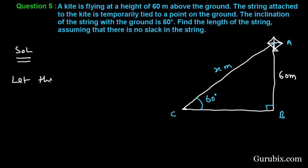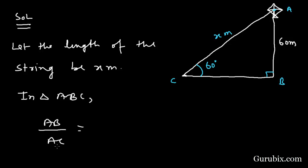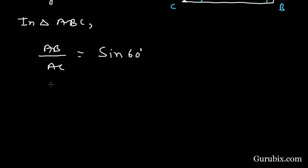Let the length of the string be X meters. Now we shall look at triangle ABC and find the ratio of AB over AC — that is the ratio of perpendicular over hypotenuse. This ratio corresponds to sine theta, and theta is 60 degrees. AB is given as 60 meters, and AC, which we have to calculate, is X. Sine 60 degrees equals square root of 3 over 2.